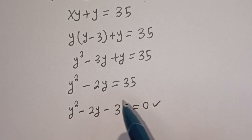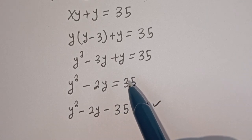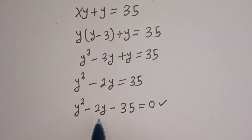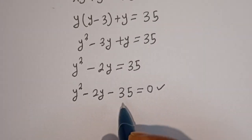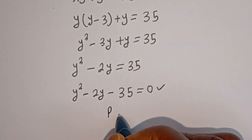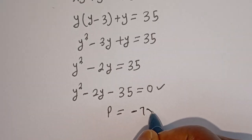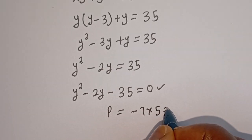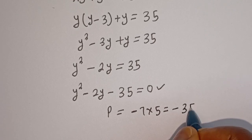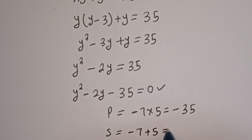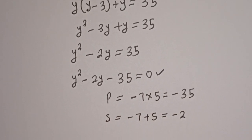This quadratic can be solved using either the quadratic formula or factorization. I'm going to use the factorization method. The product P is minus 7 multiplied by 5, which equals minus 35, and the sum is minus 7 plus 5, which equals minus 2.